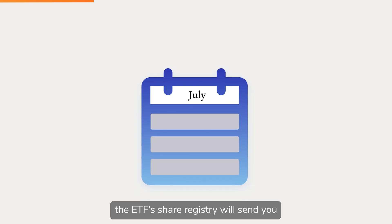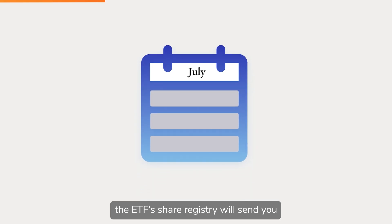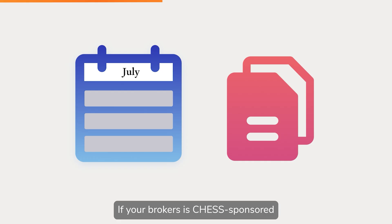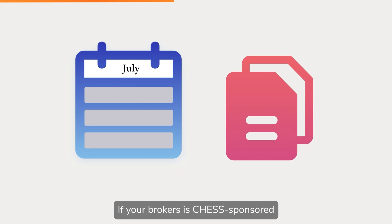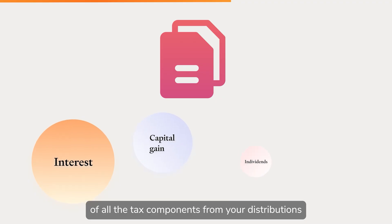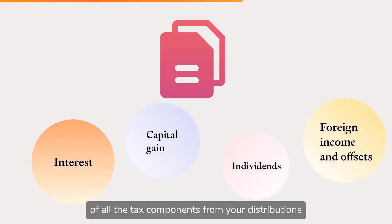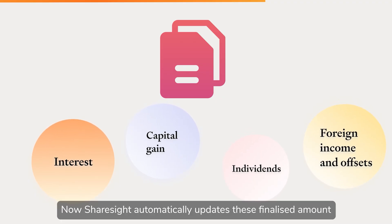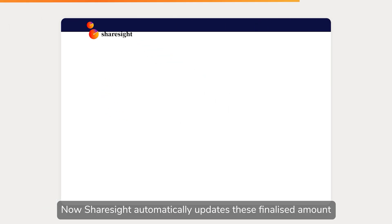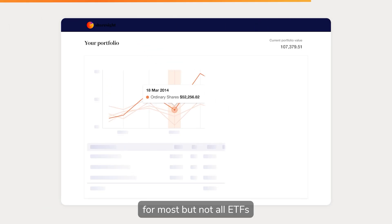the ETF's share registry will send you a consolidated annual tax statement if your broker is chess-sponsored. That statement will have a full breakdown of all the tax components from your distributions. Now Sharesight automatically updates this finalized amount for most, but not all, ETFs.